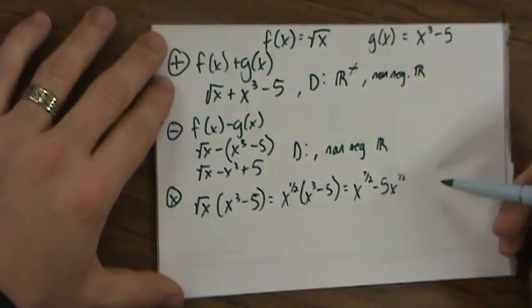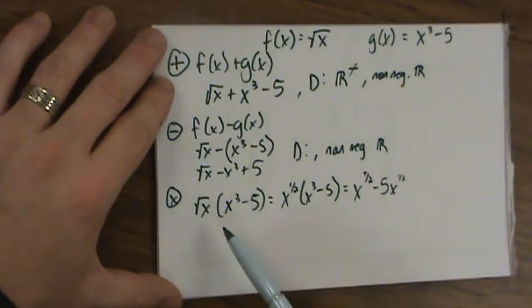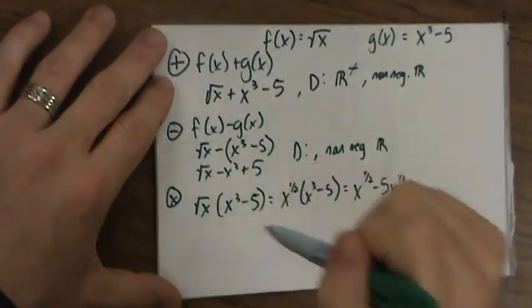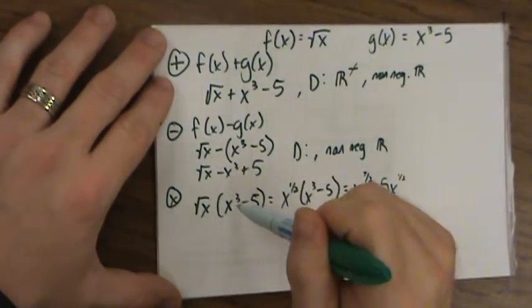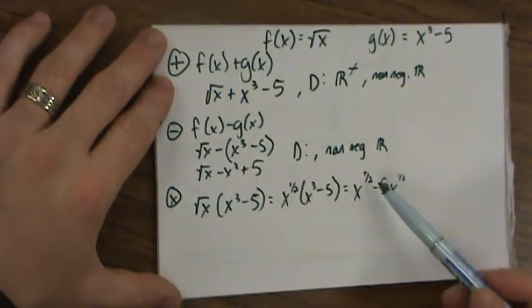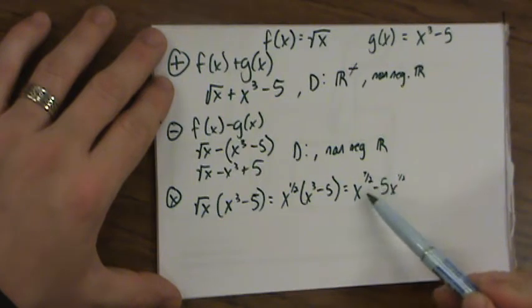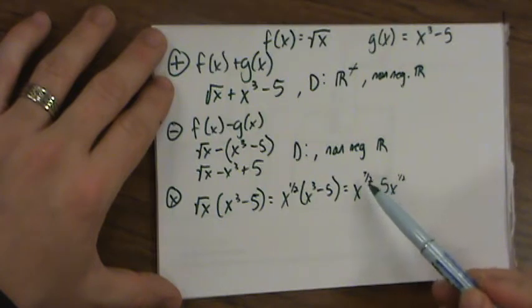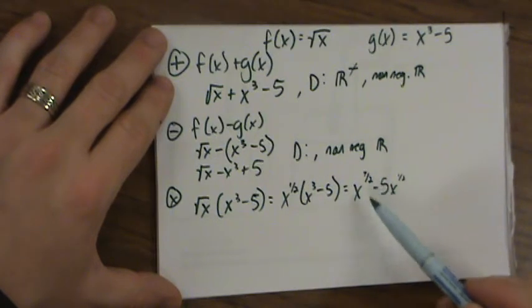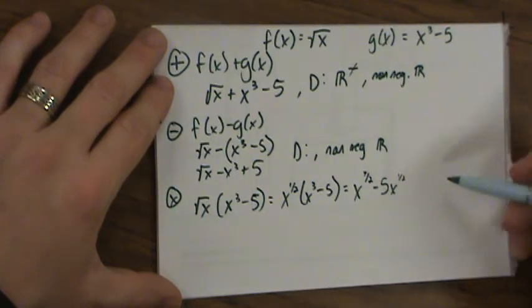What's the domain? Again, we're just combining them together. The things that are going to cause troubles are, if we try to put in a negative number, we're not going to have a problem here, but we will have a problem here. Because this has an even denominator, this means I'm going to take an even root, a square root. And you cannot have negative numbers go into an even root. So the domain is all non-negative real numbers.